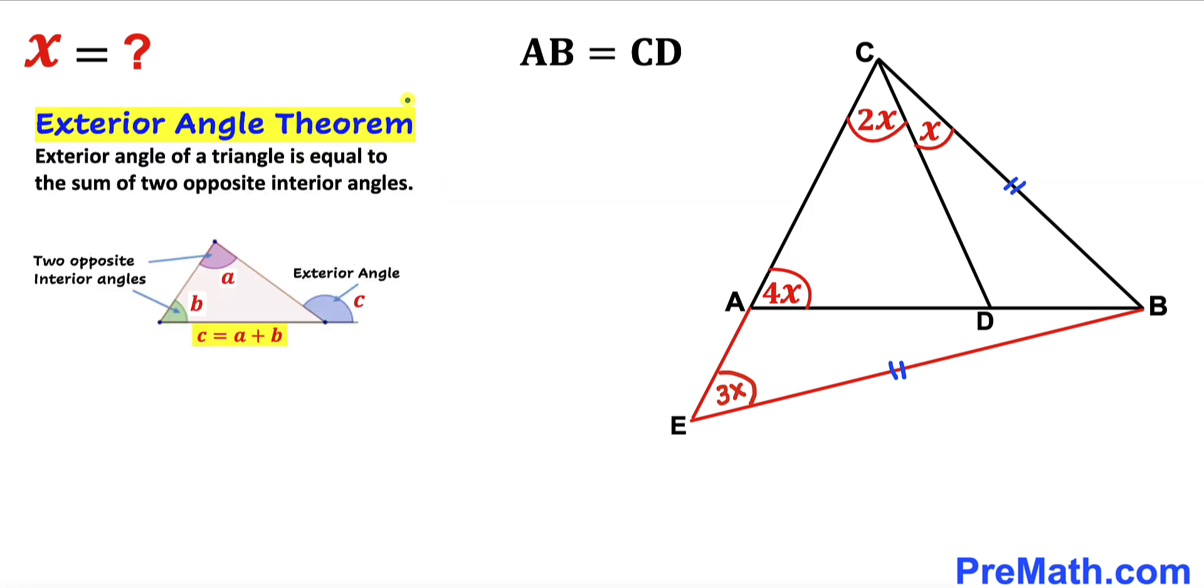Now let's recall the exterior angle theorem. According to this theorem, the exterior angle of a triangle equals the sum of two opposite interior angles. As you can see in this diagram, this is our exterior angle, while A and B are the opposite interior angles, such that angle C equals angle A plus angle B.